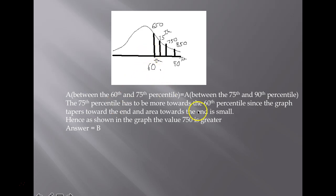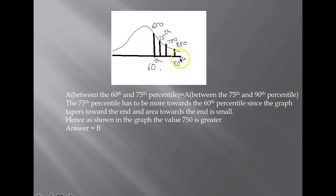The 75th percentile is more towards the 60th percentile, since the graph between the 60th and 75th is wider towards the center and as it tapers towards the end, the area is smaller. So the value 750 is exactly between 650 and 850, whereas the 75th percentile is more towards the 60th percentile. Looking at the graph, we can say that 750 is greater, so Quantity B is greater. The answer is B.